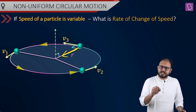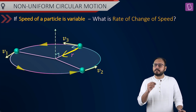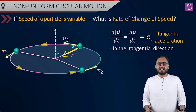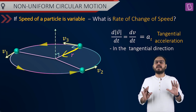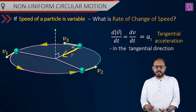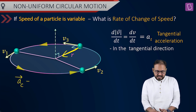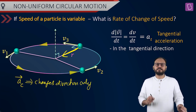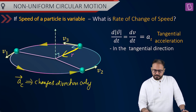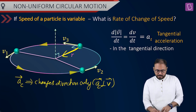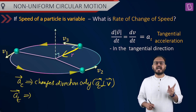Centripetal can only change direction; it cannot change magnitude. So there must be one more acceleration component responsible for changing magnitude, and that component is called tangential acceleration. There are two components: ac — centripetal acceleration — changes direction only, and in order to change only direction it must act perpendicular to velocity. Now magnitude is also changing, so the other component at — tangential acceleration — comes in.